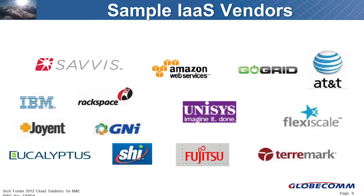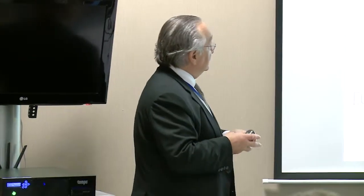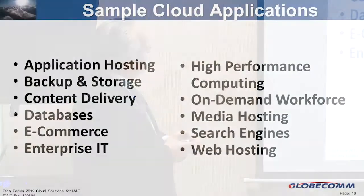Here are a number of providers offering infrastructure as a service — the ability, like Amazon Web Services, like SHI, like Fujitsu, Go Grid, and others, to configure your system and pay per-use for CPU servers and raw building blocks. There are a number of them out there; you can check their websites.